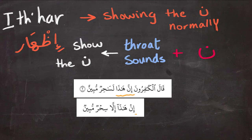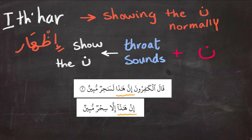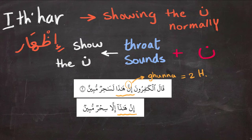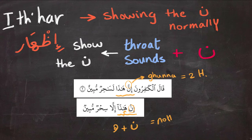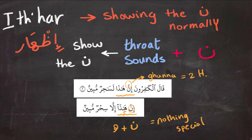Pay attention to the difference between these two examples because it is one of the most common mistakes. In the first example, 'Inna hatha,' it is a Nun with shaddah, so you need to extend it two harakat for the ghunnah. But in the second example, 'In hatha,' it is a Nun followed by a throat sound — the H — so you pronounce it normally like any other letter with no harakat involved. So: 'Inna hatha' versus 'In hatha' — remember to distinguish between these two.